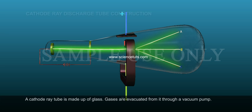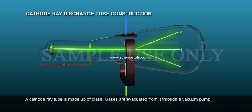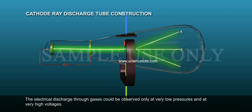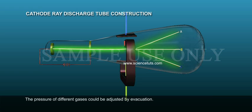Cathode ray discharge tube construction: A cathode ray tube is made up of glass. Gases are evacuated from it through a vacuum pump. Two thin pieces of metal called electrodes are sealed in it at both ends, and they are connected to a high voltage source. The electrical discharge through gases could be observed only at very low pressures and at very high voltages. The pressure of different gases could be adjusted by evacuation.